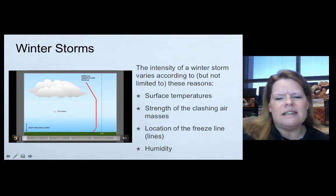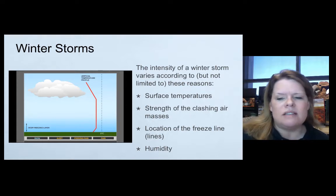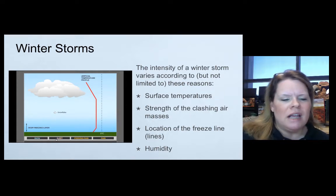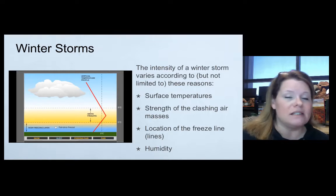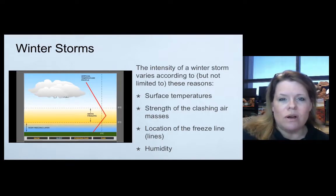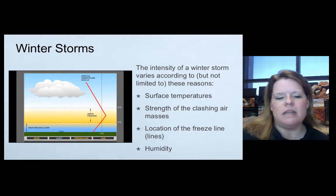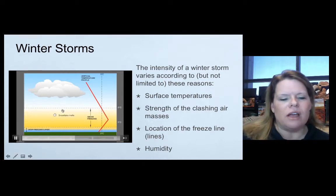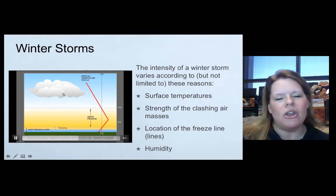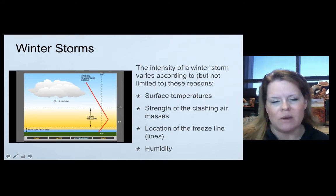The intensity of a winter storm varies according to, but not limited to: surface temperatures — cooler temperatures produce potential for snow; the strength of clashing air masses, especially polar or arctic air masses; and the location of the freeze line and humidity. All these factors impact where the freeze line might be in the height of the cloud and the type of air mass you're dealing with.